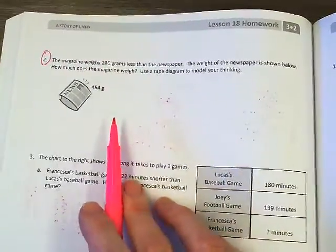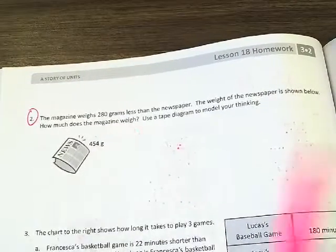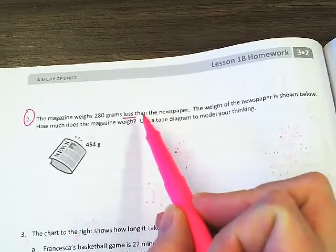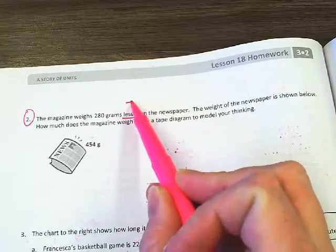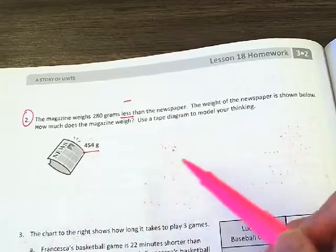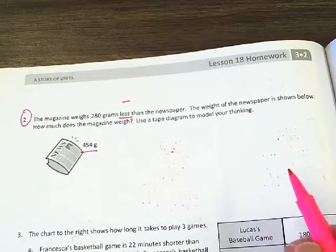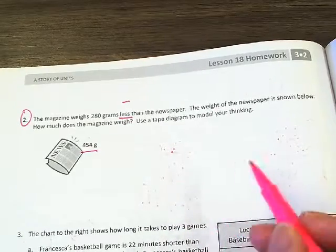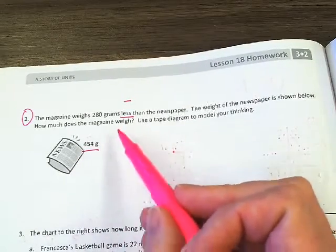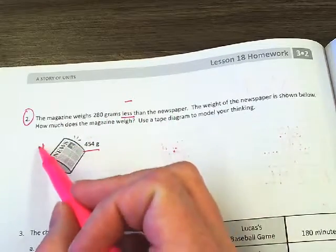Your job is to complete number two. I'm going to help you set it up. Number two: the magazine weighs 280 grams less. Oh, that's an important number. Less means subtraction, right? Then the newspaper. The weight of the newspaper is shown below. How much does the magazine weigh? Use a tape diagram to model your thinking. Okay, we want to solve this problem and we want to use a tape diagram to help us. Which weighs more, the newspaper or the magazine? The magazine weighs 280 grams less than the newspaper, so the newspaper weighs more.